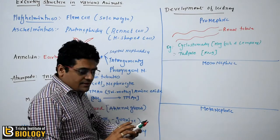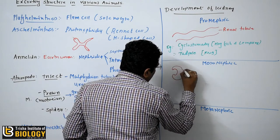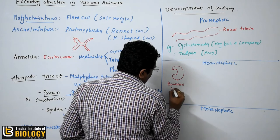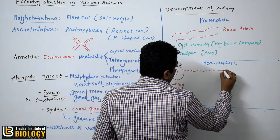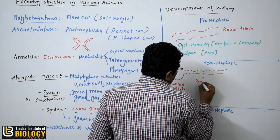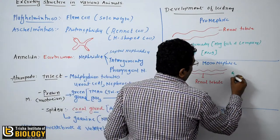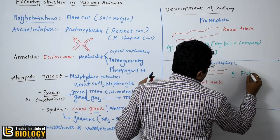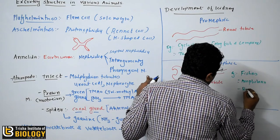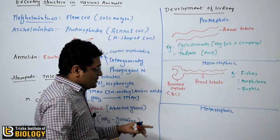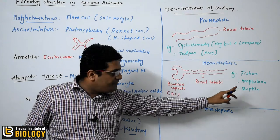The mesonephric kidney possesses the Bowman's capsule and the renal tubule. Mesonephric kidneys are found in fishes, amphibians, and reptiles.